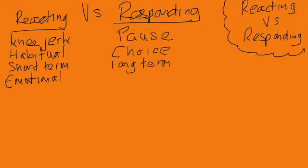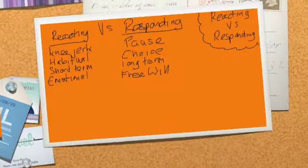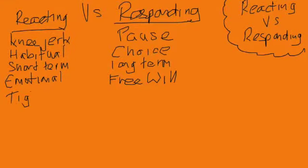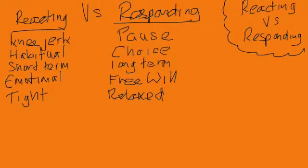Responding, on the other hand, implies that we have an element of free will that we can deploy. And when we have free will, we're making choices, and when we're making choices, we're making more wise decisions for the future. There's a tightness associated with reactions — we're often very taut, reacting without thinking. There is more of a relaxed approach when it comes to responding, because we're more considered and because we have choices.